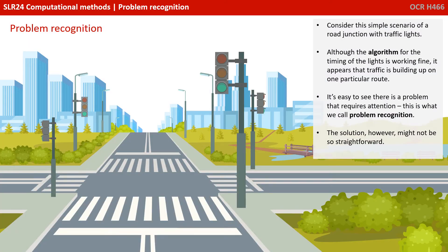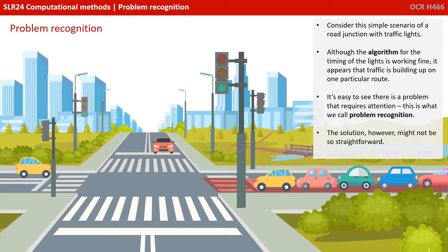Consider the simple scenario of a road traffic junction with traffic lights. Although the algorithm for the timing of the lights is working fine, it appears that traffic is building up on one particular route. It's easy to see there's a problem that requires attention — this is what we call problem recognition. The solution, however, might not be so straightforward.